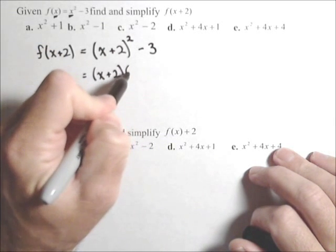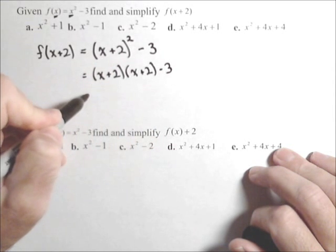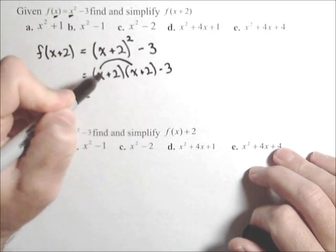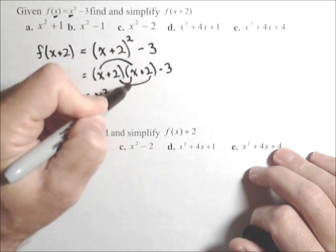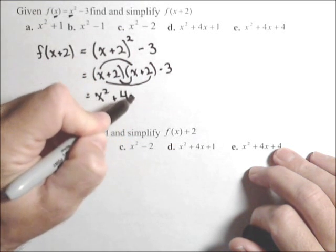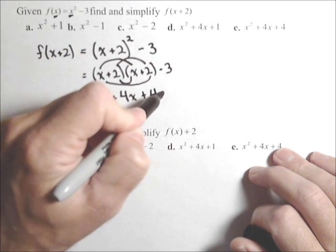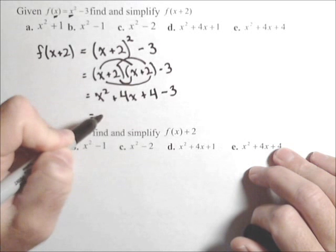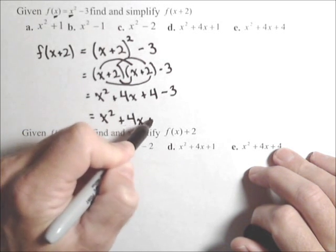So that's x plus two times x plus two minus three. So foiling this out, we have x squared. We're gonna have a two x and a two x from the middle, so that's plus four x. And finally, the last end, we got a plus four minus three. So x squared plus four x plus one.